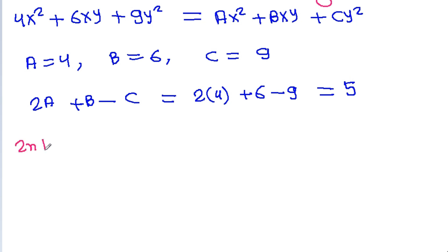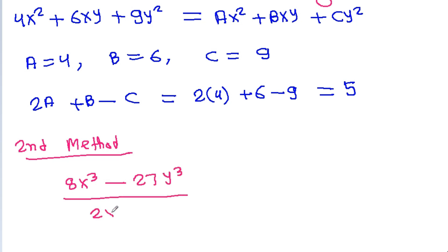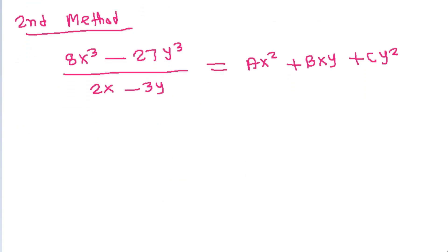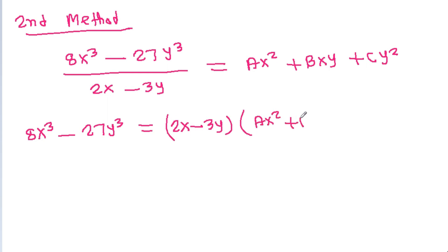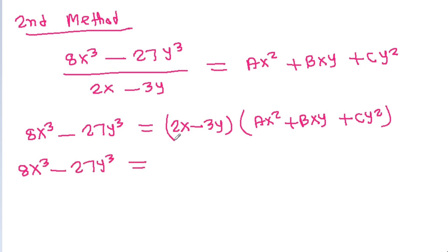The second method: we have given (8x³ - 27y³) divided by (2x - 3y) is equal to ax² + bxy + cy². So 8x³ - 27y³ equals (2x - 3y) times (ax² + bxy + cy²). Expanding, 2x times ax² gives 2ax³.